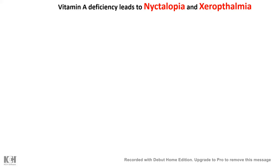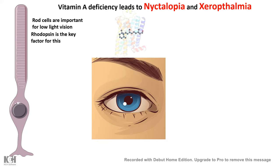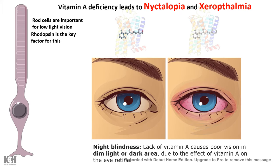Vitamin A deficiency leads to several conditions like nyctalopia and xerophthalmia. Nyctalopia means night blindness. Rod cells are super important for low-light vision. When vitamin A is deficient, too much rhodopsin is not functional, making it difficult to see under low-light situations.